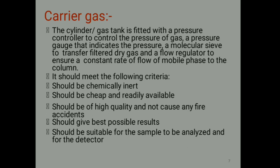Let us discuss the different parts. First, we have the carrier gas. The cylinder or gas tank is fitted with a pressure controller to control the pressure of the gas, a pressure gauge that indicates the pressure, a molecular sieve to transfer filtered dry gas, and a flow regulator to ensure a constant rate of flow of mobile phase to the column. It should meet the following criteria: should be chemically inert, should be cheap and readily available, should be of high purity and not cause any fire accidents, should give best possible results, and should be suitable for the samples to be analyzed and for the detector.